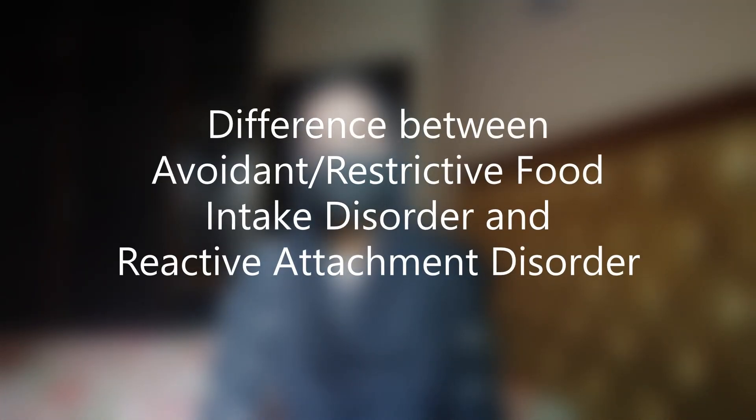Avoidant restrictive food intake disorder is different from reactive attachment disorder. Avoidant restrictive food intake disorder is a feeding and eating disorder, while reactive attachment disorder is a trauma and stress related disorder. In reactive attachment disorder, the person has a persistent pattern of inhibited and emotionally withdrawn behavior toward their caregiver. In avoidant restrictive food intake disorder, the individual avoids food due to the sensory characteristics of food.